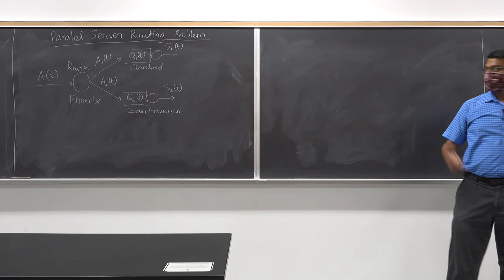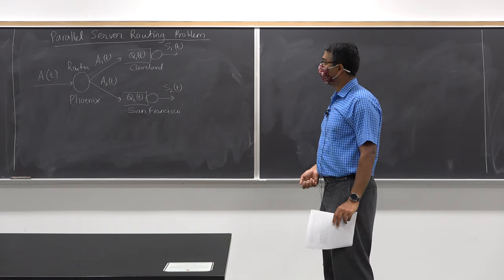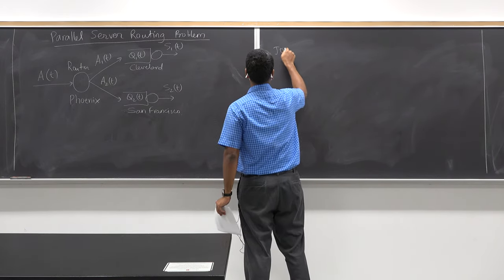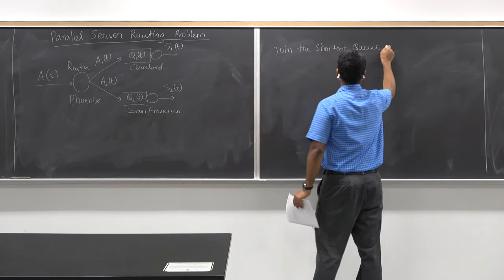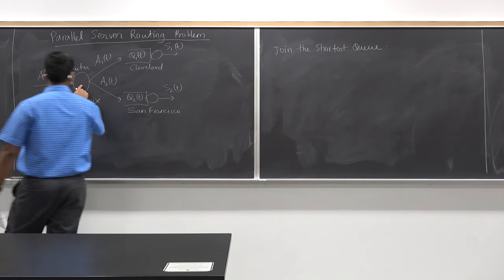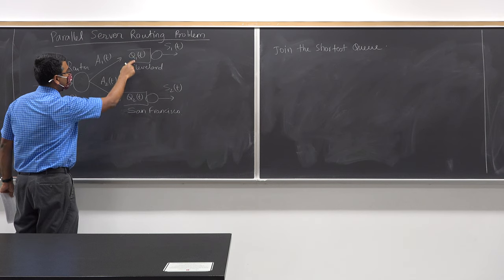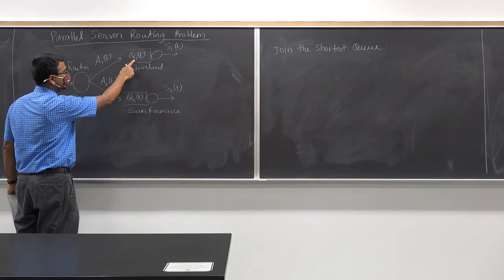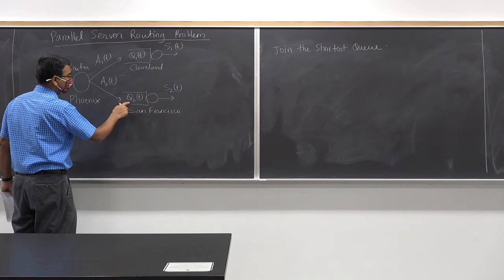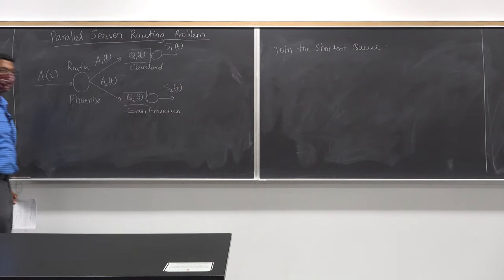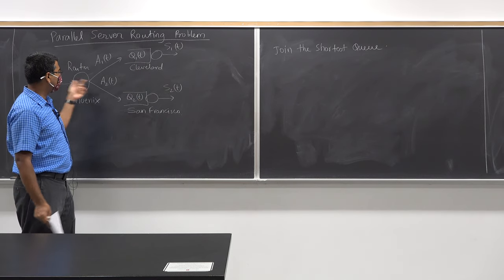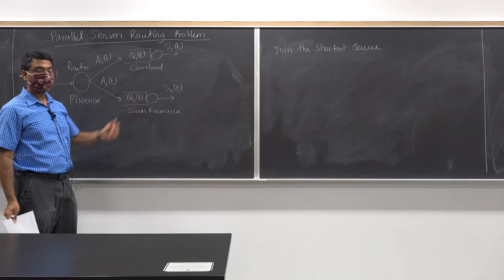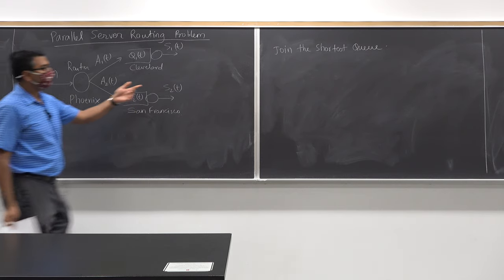One simple heuristic is known as Join the Shortest Queue. The router looks at queue lengths: if the Cleveland data center has a million requests to fulfill in the next 30 seconds and San Francisco has only 5,000, the shortest queue is San Francisco with 5,000 versus 1 million. So the router sends all incoming requests to the San Francisco data center. That's the Join the Shortest Queue policy.